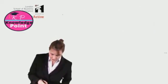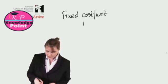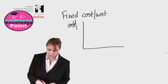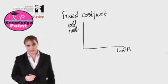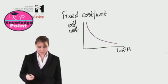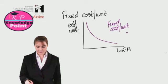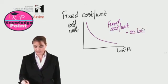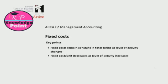Finally, if we were to show this on a graph of fixed cost per unit — with cost per unit on the y-axis and level of activity on the x-axis — we would get a graph something like this. This is our fixed cost per unit, and as we've seen, as level of activity goes up, the fixed cost per unit will go down.